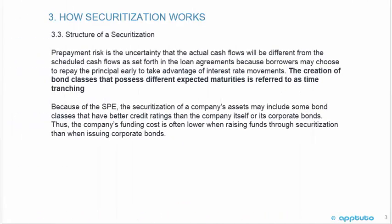The creation of bond classes that possess different expected maturities is referred to as time tranching.